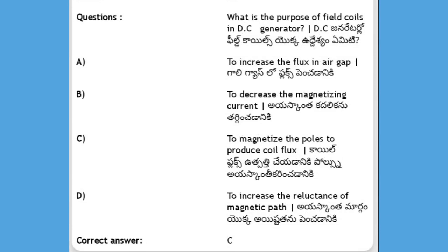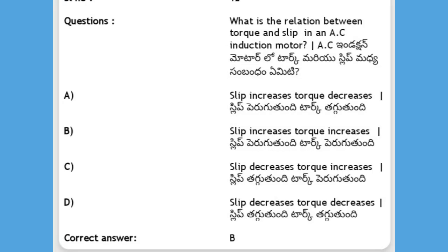What is the purpose of field coils in a DC generator? Options: to increase the flux in the air gap, to decrease the magnetizing current, to magnetize the poles to produce coil flux, to increase the reluctance of the magnetic path. The answer is C, to magnetize the poles to produce coil flux.